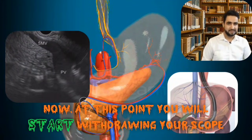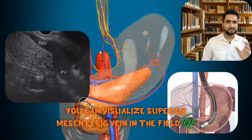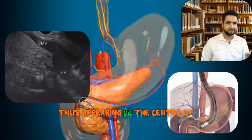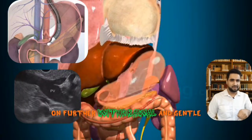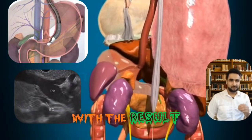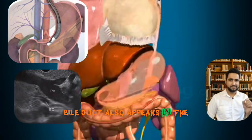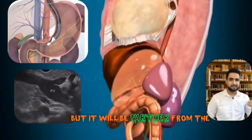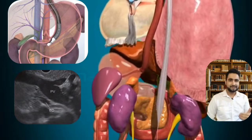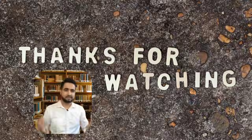Now start withdrawing your scope. Again you can visualize the superior mesenteric vein in the tip beam range on the left side, and the portal vein in the central beam range in the center. On further withdrawal and gentle deflection of the big knob, the transducer straightens, and the portal confluence again comes to the central field. At this point, the bile duct also appears in the tip beam group, farther from the probe. On further withdrawal you can trace the portal vein and bile duct up to the hilum — the bile duct appearing farther from the probe when visualized from the stomach. This concludes the transgastric aortic route.